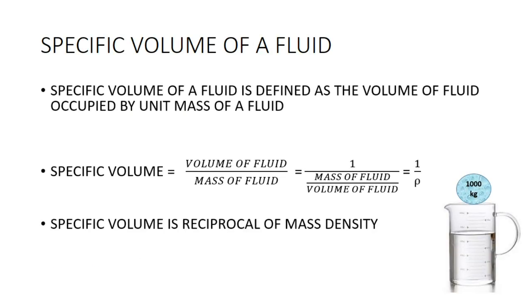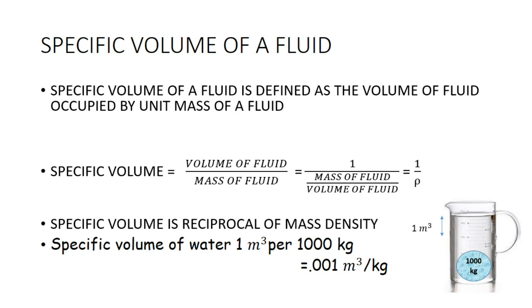Specific volume of a fluid is defined as the volume of fluid occupied by unit mass of a fluid. In expression, specific volume equals volume of fluid divided by mass of the fluid. It can be expressed in terms of density as the reciprocal of density, i.e., 1 by rho. To understand this concept, let us take a bubble containing water of 1000 kg mass. If we immerse that bubble into a container containing another liquid, it will displace a liquid of volume 1 meter cube. Hence the 1000 kg mass of water will displace a volume of 1 meter cube, and the volume displaced by a unit kg of water is 0.001. So the specific volume of water is equal to 0.001 m³ per kg.